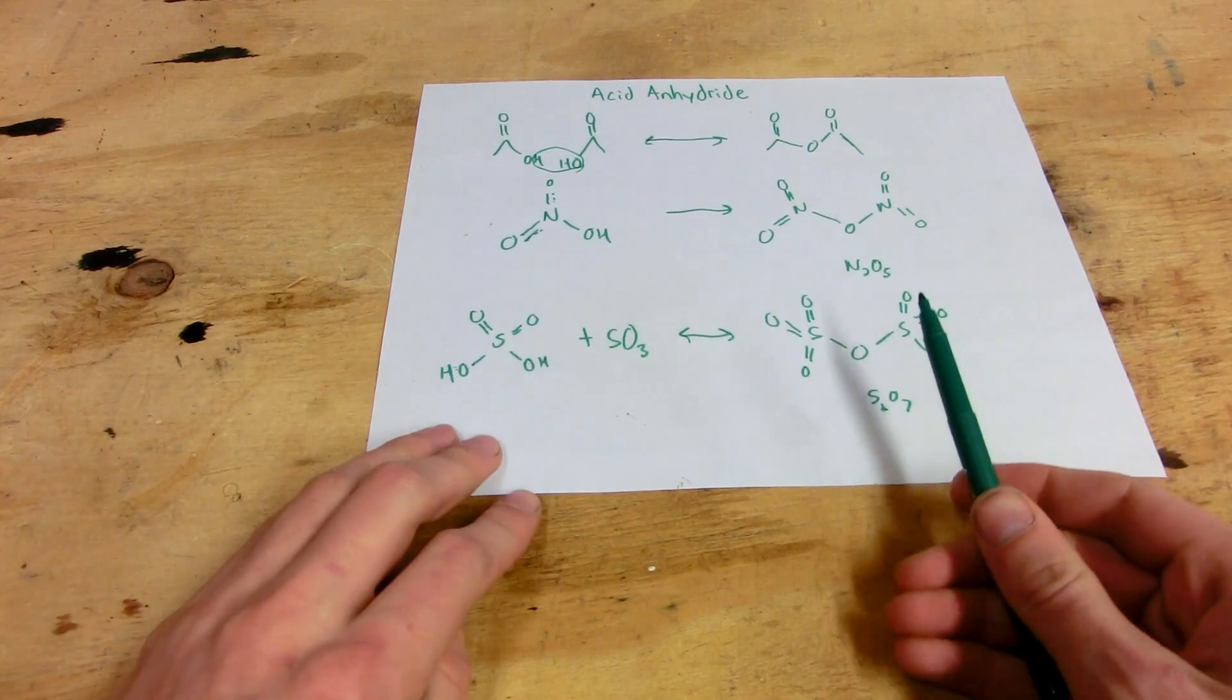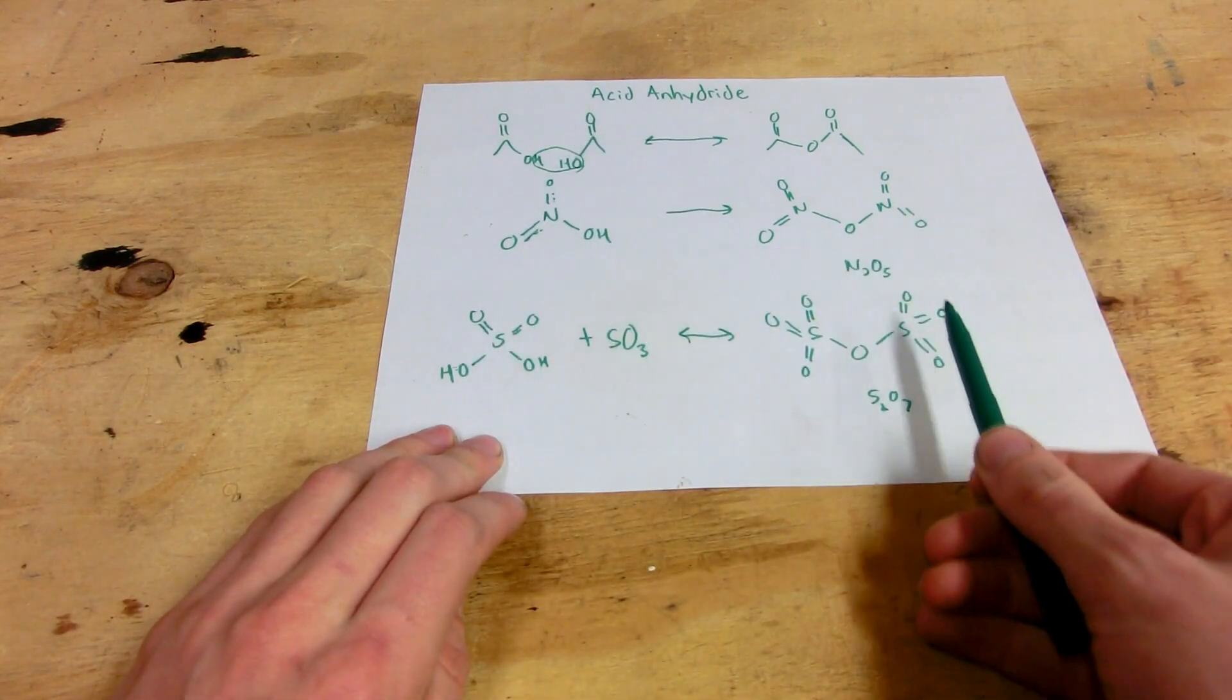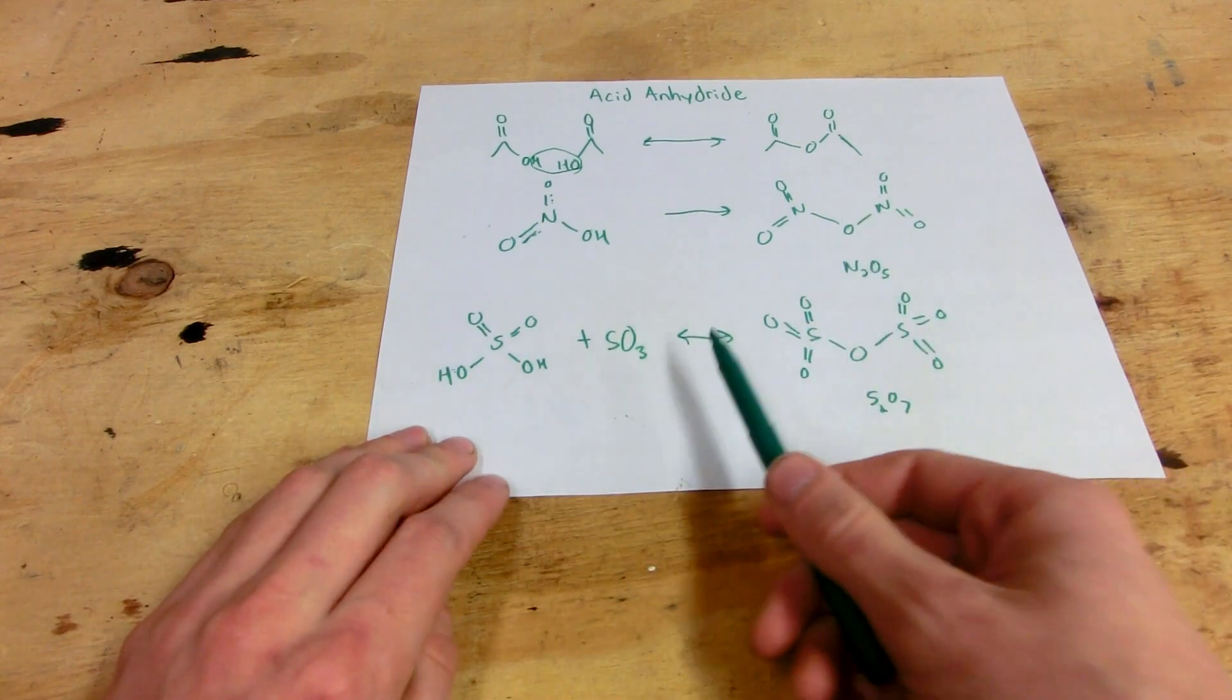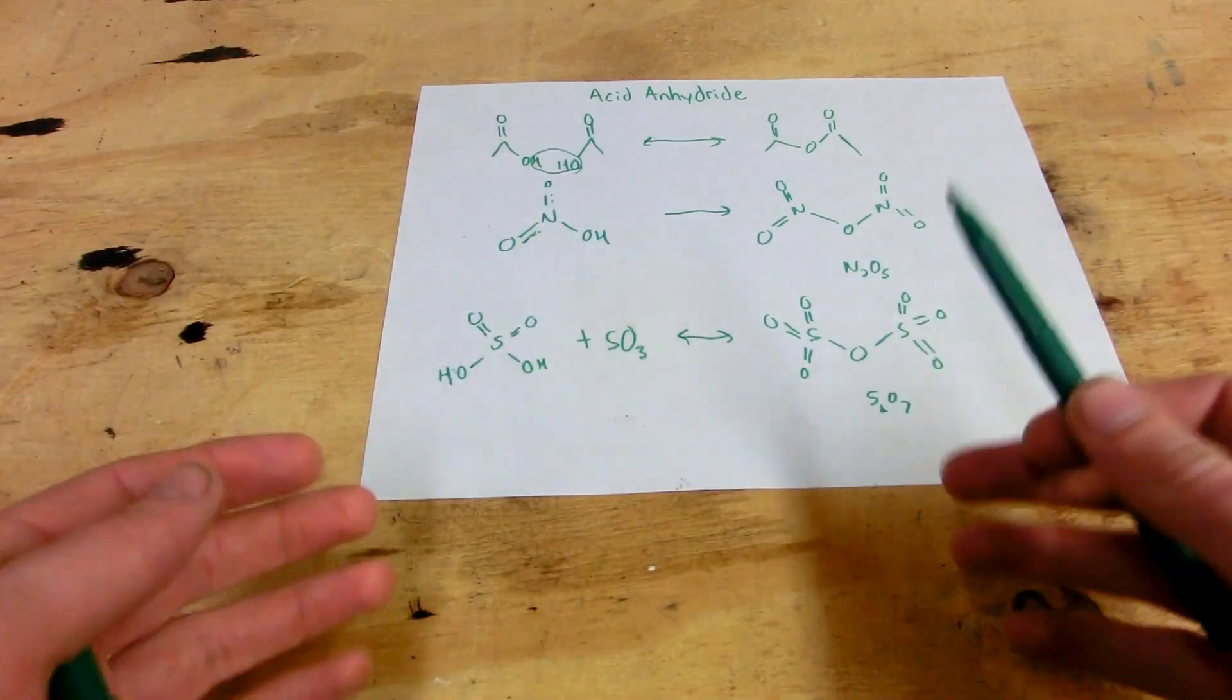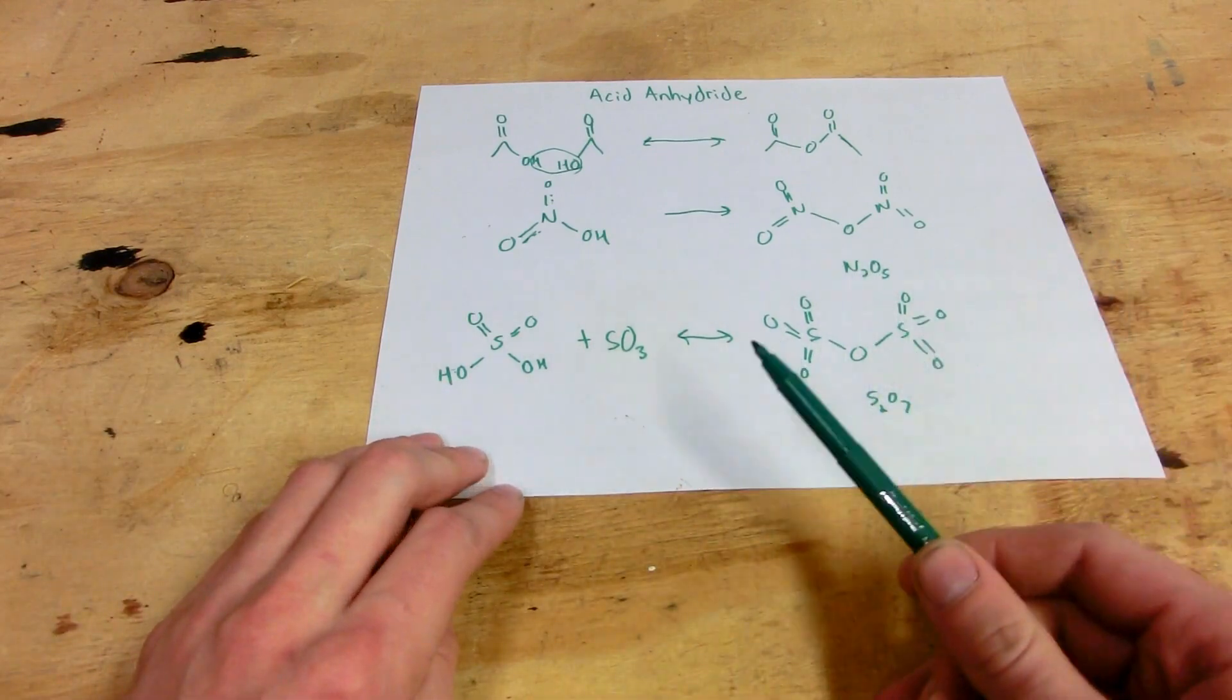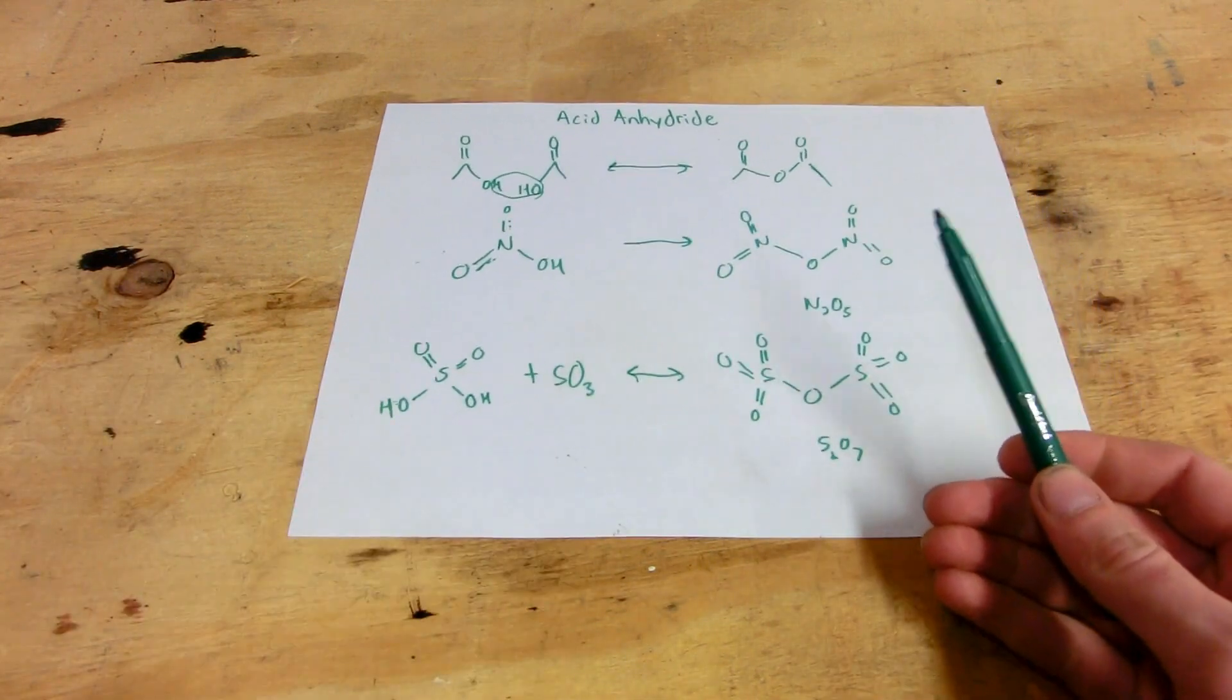Anyway, and so when you put water, when you mix water with this oleum, the anhydride converts to more sulfuric acid. So you don't actually dilute the sulfuric acid, you just reduce the overall amount of sulfur trioxide dissolved in it. So you can use, it's essentially like 110 or 120% sulfuric acid, because you could add 20% weight, 20 weight percent water to it, and it would still remain 100% sulfuric acid. So that's a little lesson on oleum.